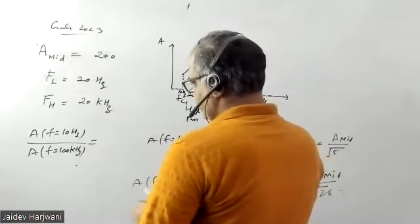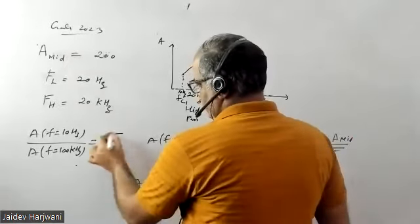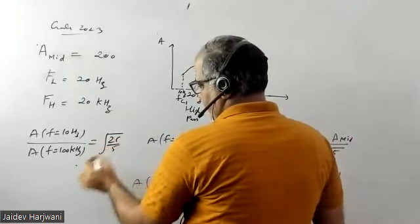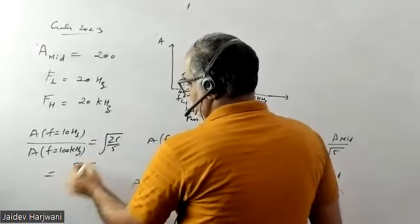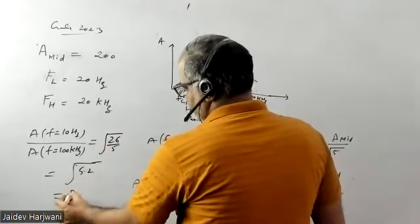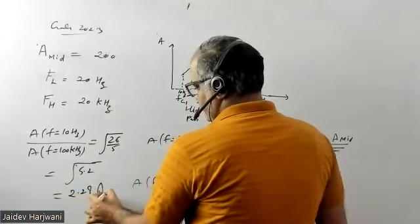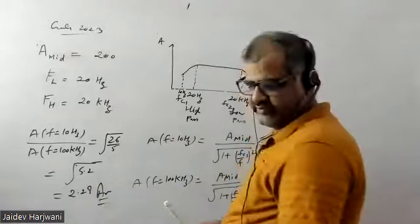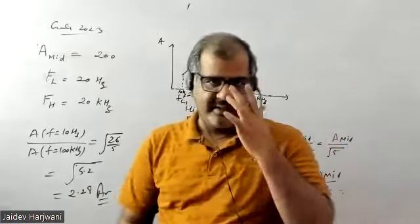And if I calculate the ratio, this ratio will come 26 by 5, that will be 5.2. If you solve this one, this comes out to 2.8. So this is the answer for this question.